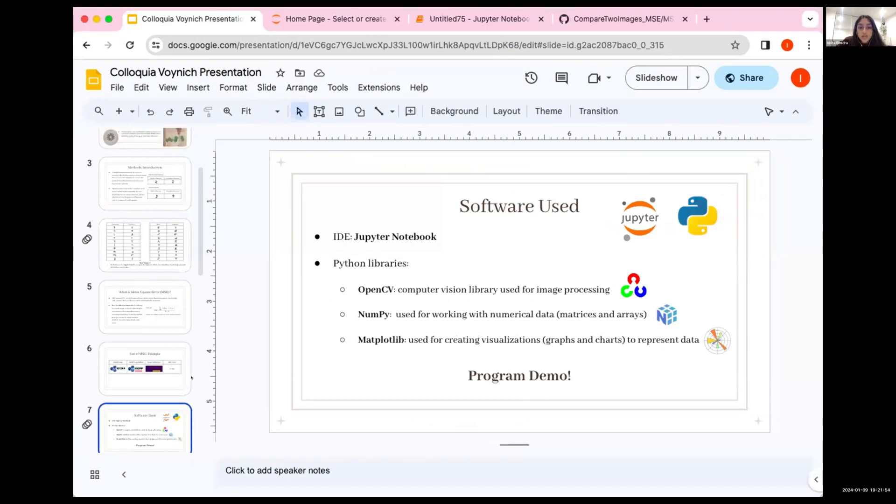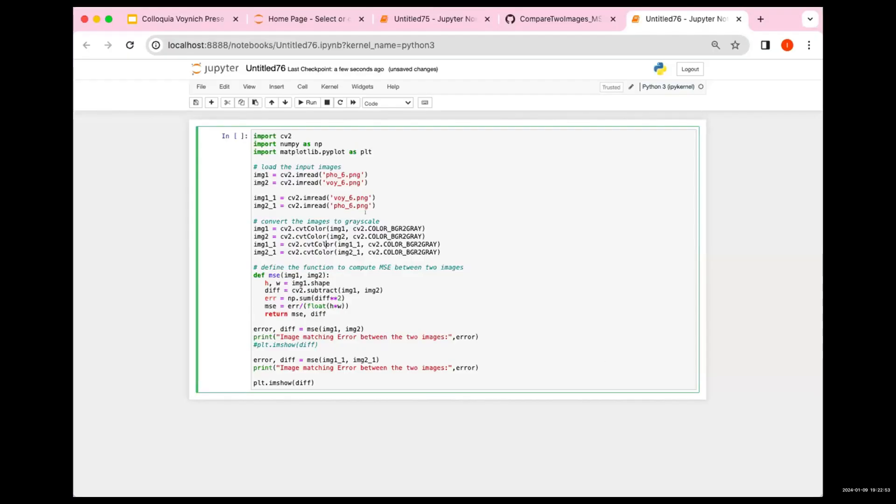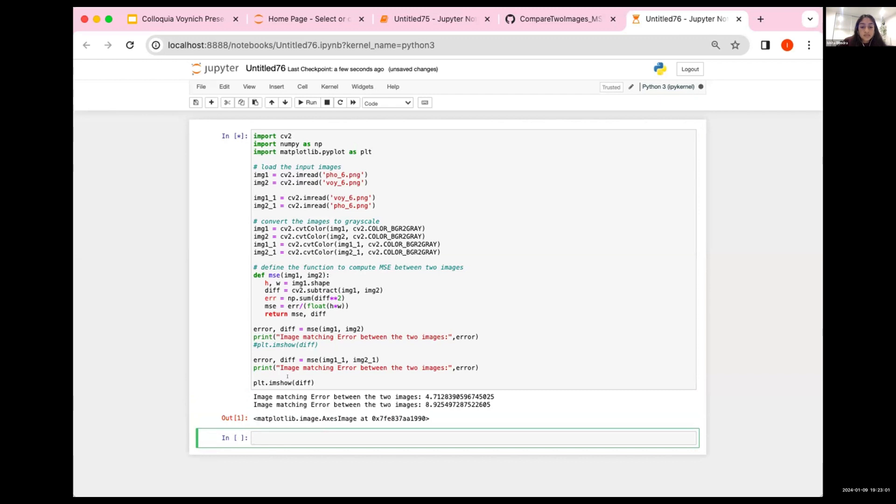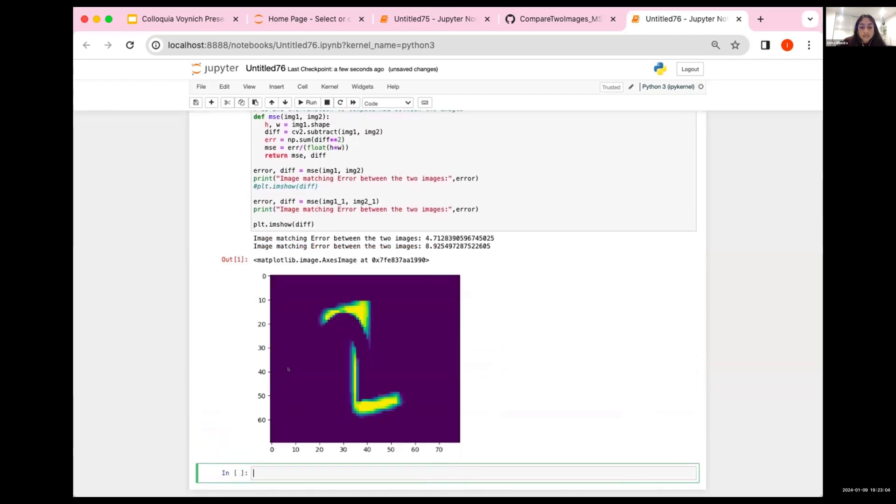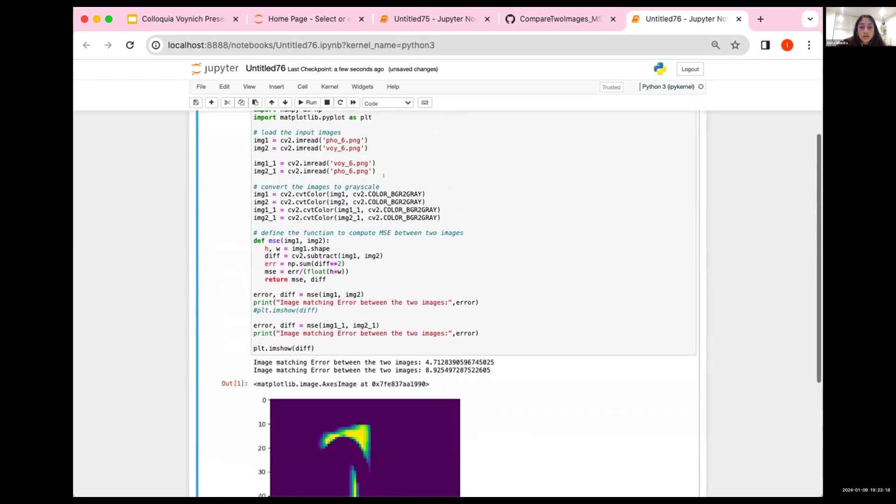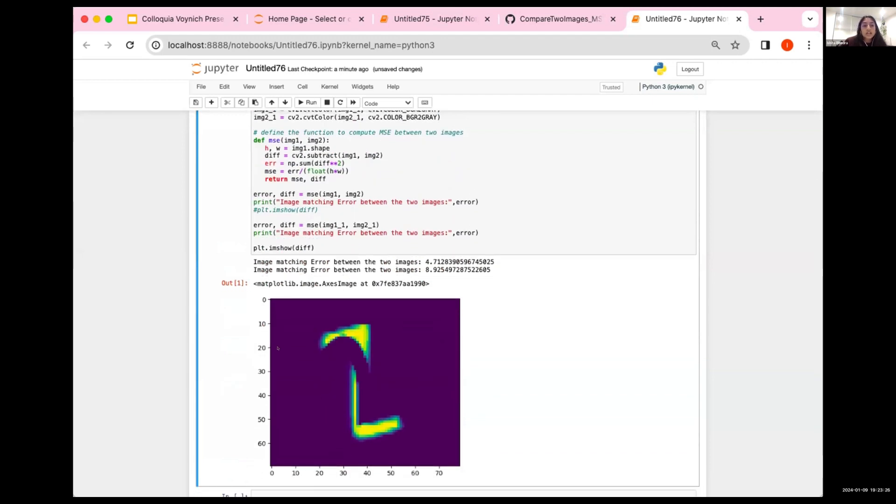Okay, so here's Jupyter Notebook, and then that's the code. And the lowest value was 4.7. And it also outputs the difference in the images. So there's two mean square error values depending on which image is on top, like if the Phoenician image is on top or the Voynich's image is on top. And I did this same process for every single character I analyzed.